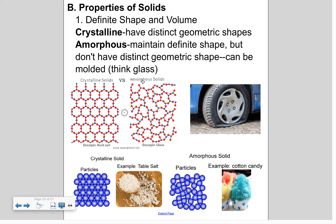You can heat up glass, mold it into a different shape, and it cools and is still solid. Rubber is the same way. With crystalline solids you get a nice orderly arrangement, whereas amorphous solids are not so distinct. Table salt is a great example of a crystalline solid, and cotton candy is an example of an amorphous solid.